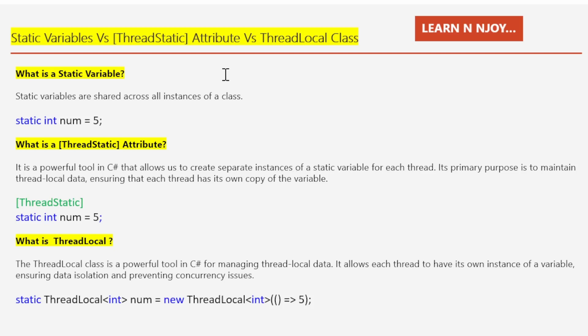What is a static variable? Static variables are shared across all instances of a class. In a single-threaded environment, this is not typically a problem. However, in a multi-threaded environment, multiple threads can access and modify static variables concurrently, leading to unexpected results.